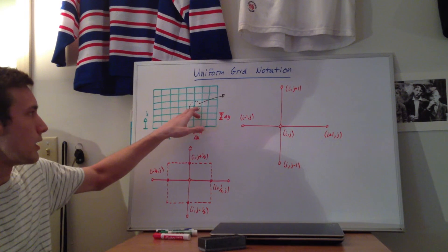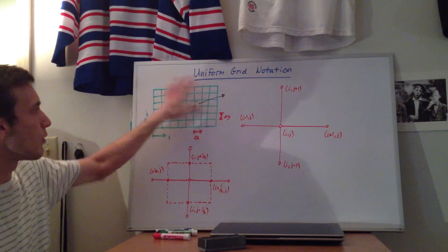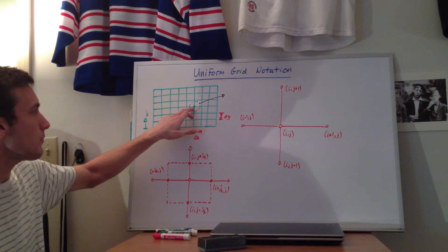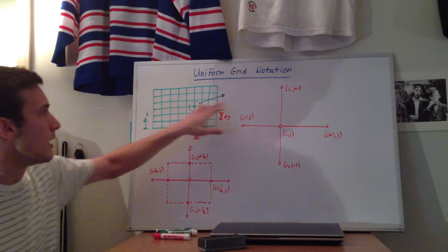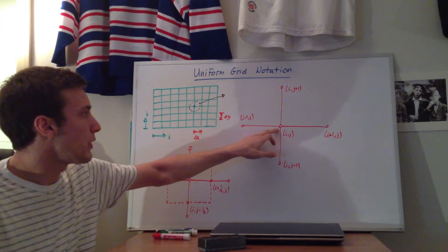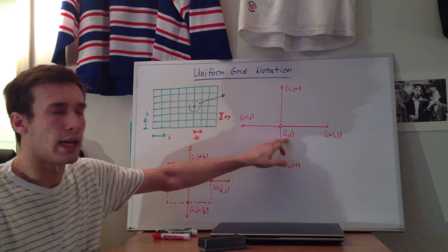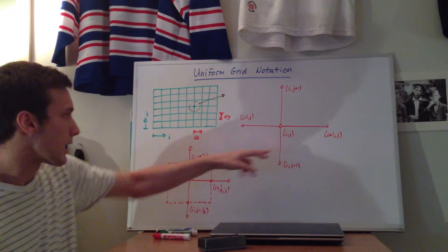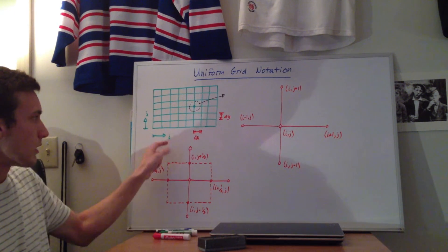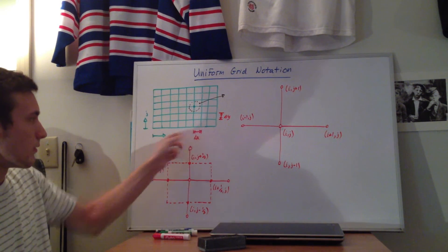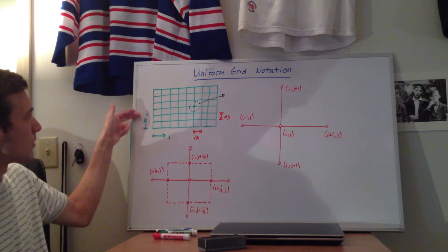So we're going to look at this one point here. So I'm just taking this one random point in this entire domain, and we're going to come out here. So that point that I'm talking about is going to be called point i comma j. I'm calling it i comma j because in the x direction we're labeling these points with i and in the y direction we're labeling them with j.